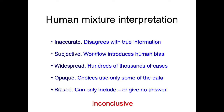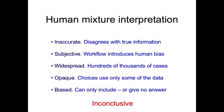So what are the problems with human mixture interpretation? It's inaccurate — it has very little to do with the actual identification information that's there. It's subjective; the software workflow introduces tremendous human bias. It's widespread — hundreds of thousands, probably millions of cases across the US, probably 10 or 20,000 cases in New York. And it's opaque — you don't really know why analysts are choosing some data over others. It can only include or give no answer, and the main answer you get from these methods is inconclusive.